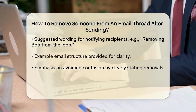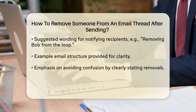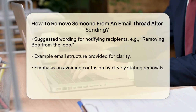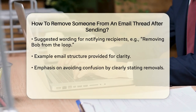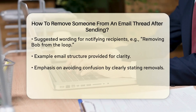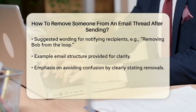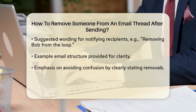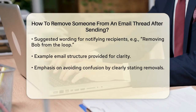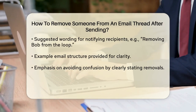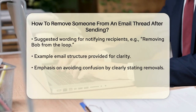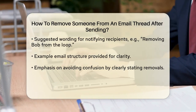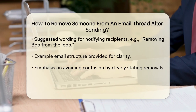When you need to remove someone from the loop, you should inform the other recipients about the change. Start your next email in the thread by mentioning that you are removing the person. For example, you could write 'Removing Bob from the loop' at the top of your email. This way, everyone knows that Bob is no longer part of the conversation.